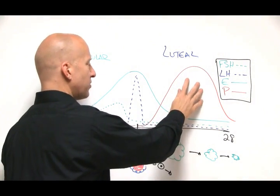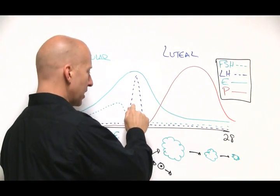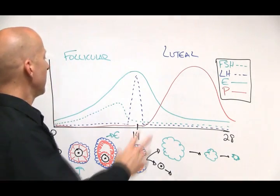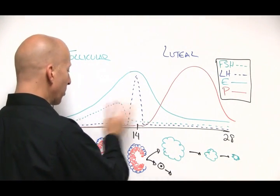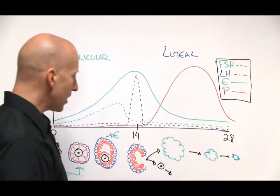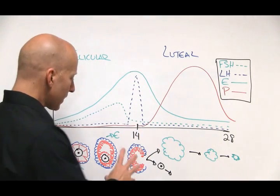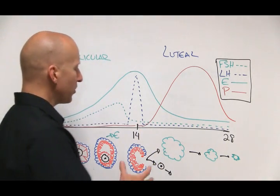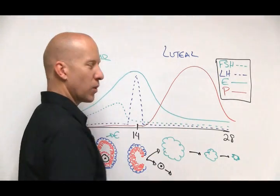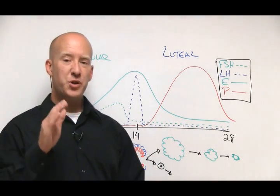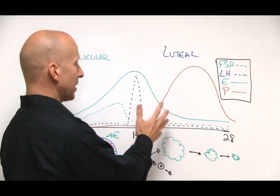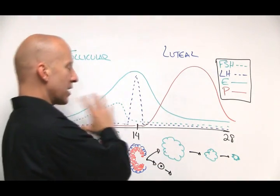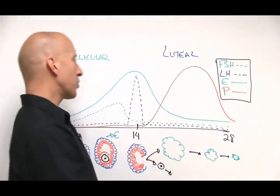But low progesterone can obviously be predicated on low luteinizing hormone, low estrogen, low FSH, all prior to that could be pituitary issues. Or remember that progesterone is being made from this corpus luteum. The corpus luteum might have issues and that's not making it as well. I'll be honest with you, low progesterone is more often something that was caused prior to it in the cycle than it is a dysfunctional corpus luteum.